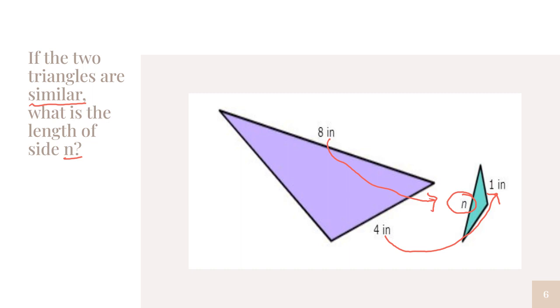I ask myself, what can I multiply or divide four by to get one? Four divided by four would give me one. So I have to do that to my other side length too. Eight divided by four would give me N. Eight divided by four equals two, so N equals two.